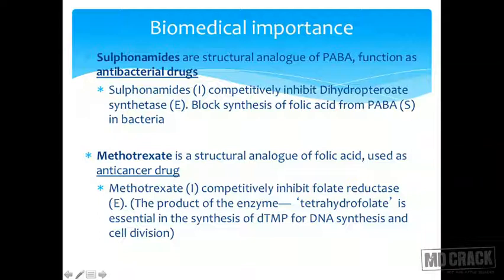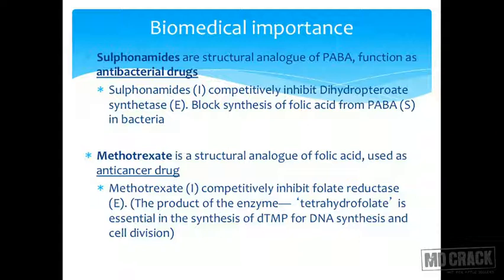Another important example is methotrexate. Methotrexate is a structural analog of folic acid and is used as an anti-cancer drug. Methotrexate is the inhibitor which competitively inhibits folate reductase. The product of this enzyme is tetrahydrofolate, which is essential for the synthesis of DNA and cell division. In the human body, methotrexate competitively inhibits folate reductase, thereby acting as an anti-cancer drug and preventing cancer cells from dividing.